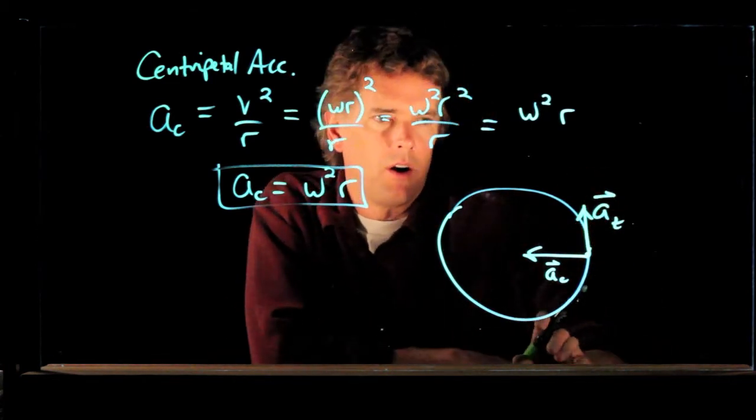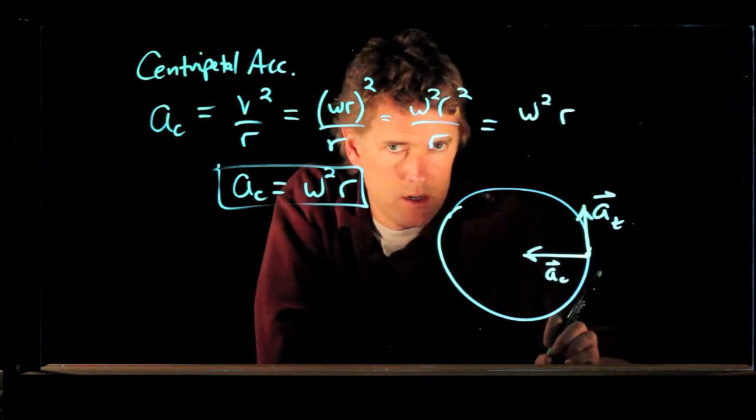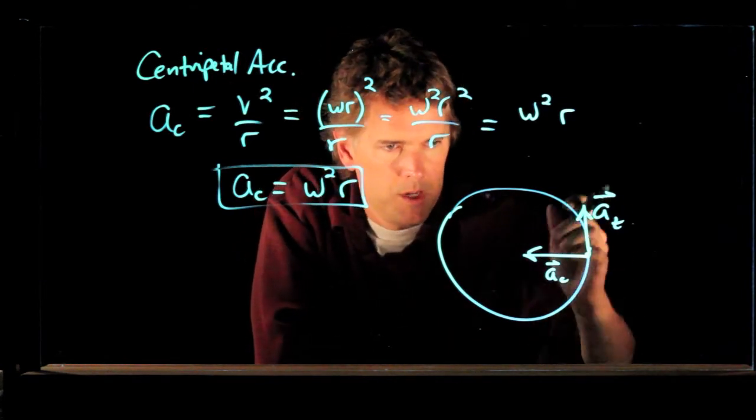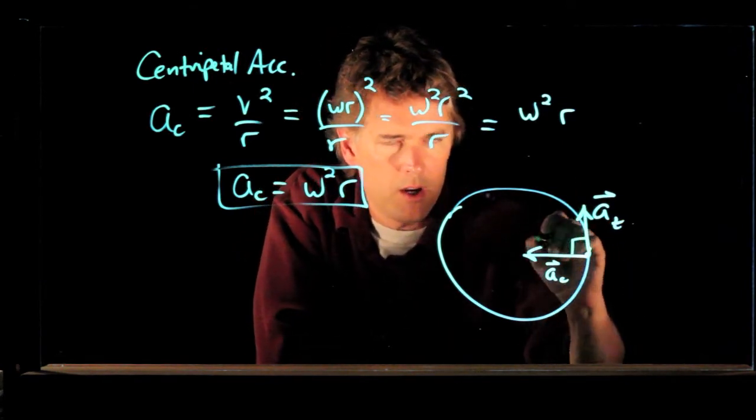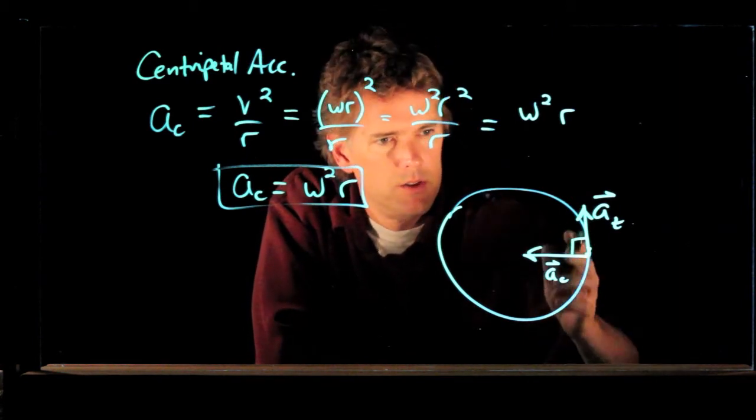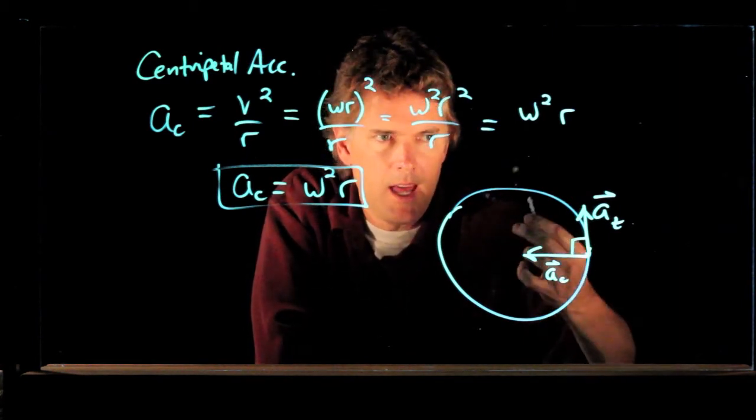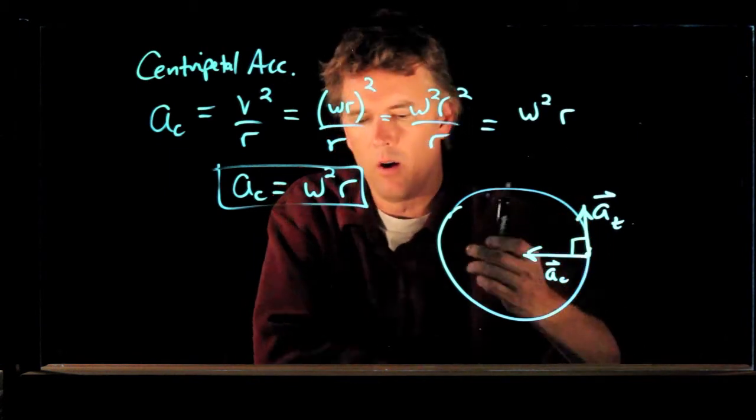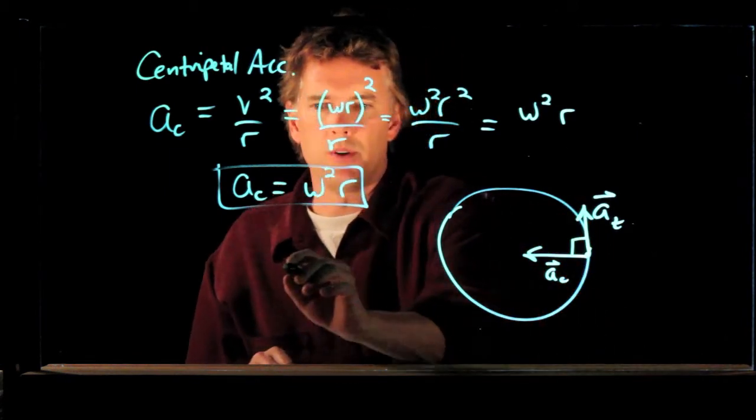And those are always tangent to the circle, which means that it is orthogonal, at a right angle, to a sub c. A sub c and a sub t are always at a right angle to each other.